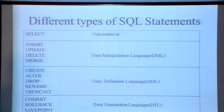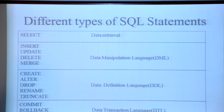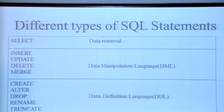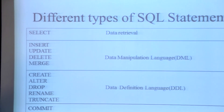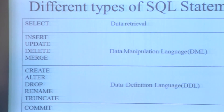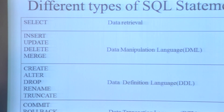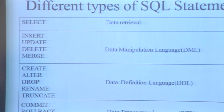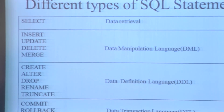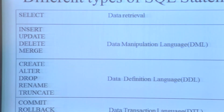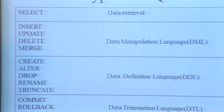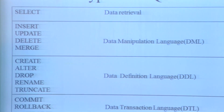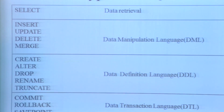We are going to see the different types of SQL statements. SQL statements can be categorized into five types. SELECT is called data retrieval, and INSERT, UPDATE, DELETE, and MERGE are called the Data Manipulation Language, DML.